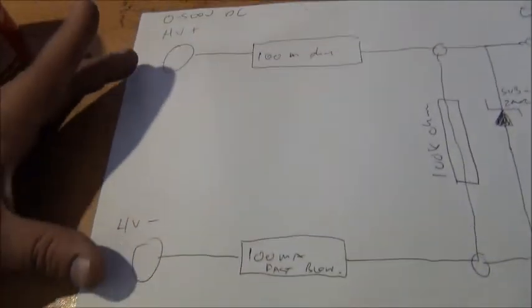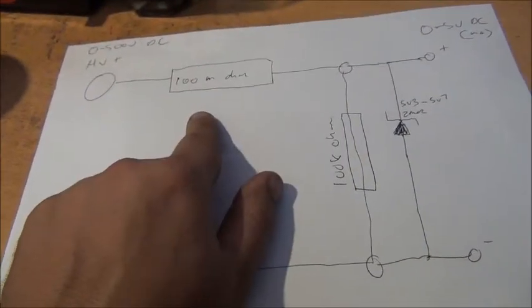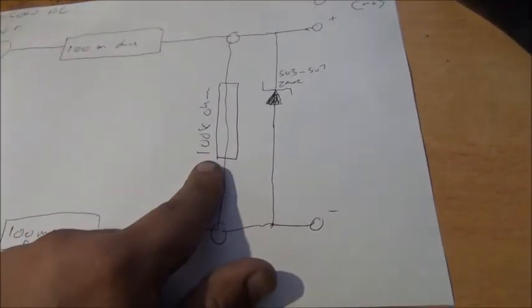So it's very easy. You've got high voltage DC that comes in on this side, positive and negative. 100 megaohm resistor, 100k ohm resistor...